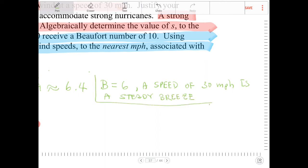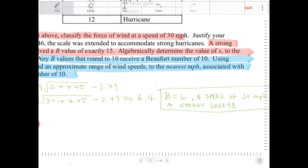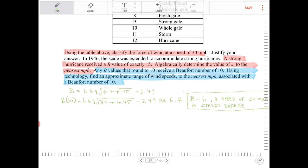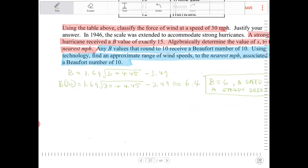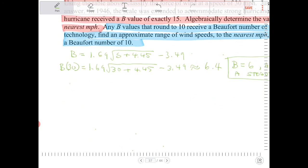That's the answer to the first question. The second question is, a strong hurricane received a b value of exactly 15. Algebraically, determine the value of s to the nearest mile per hour. So here, the second question, we're given the b value, which is 15, and we're asked to solve for the wind speed. So I replace b with 15, and we have to isolate s.